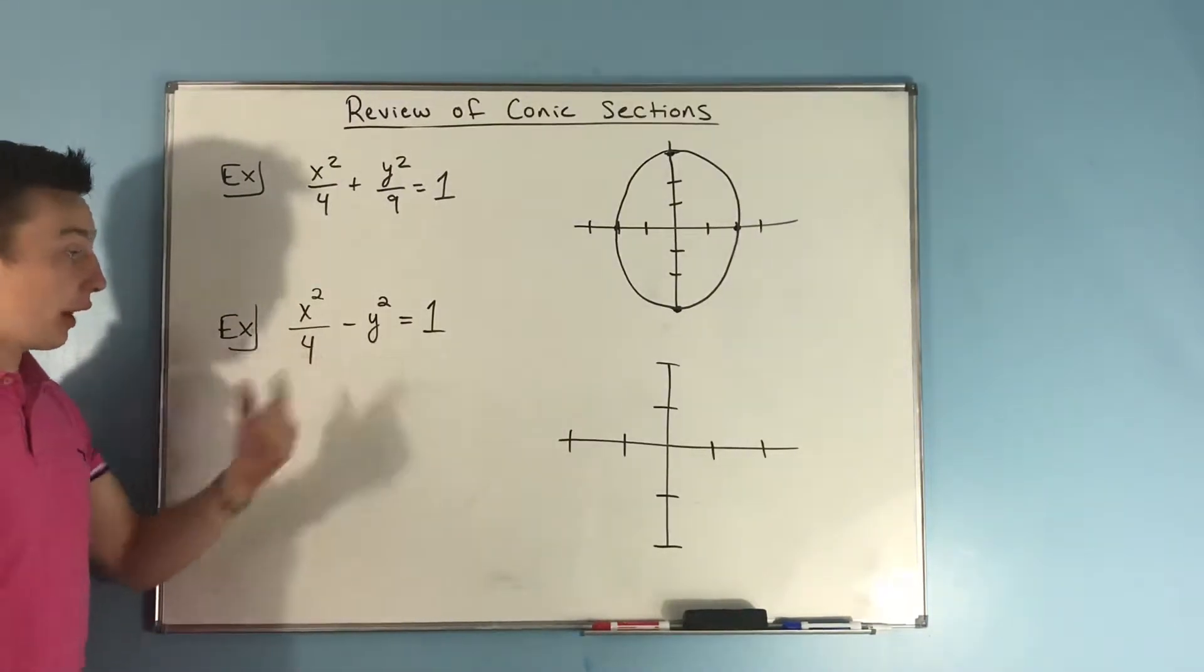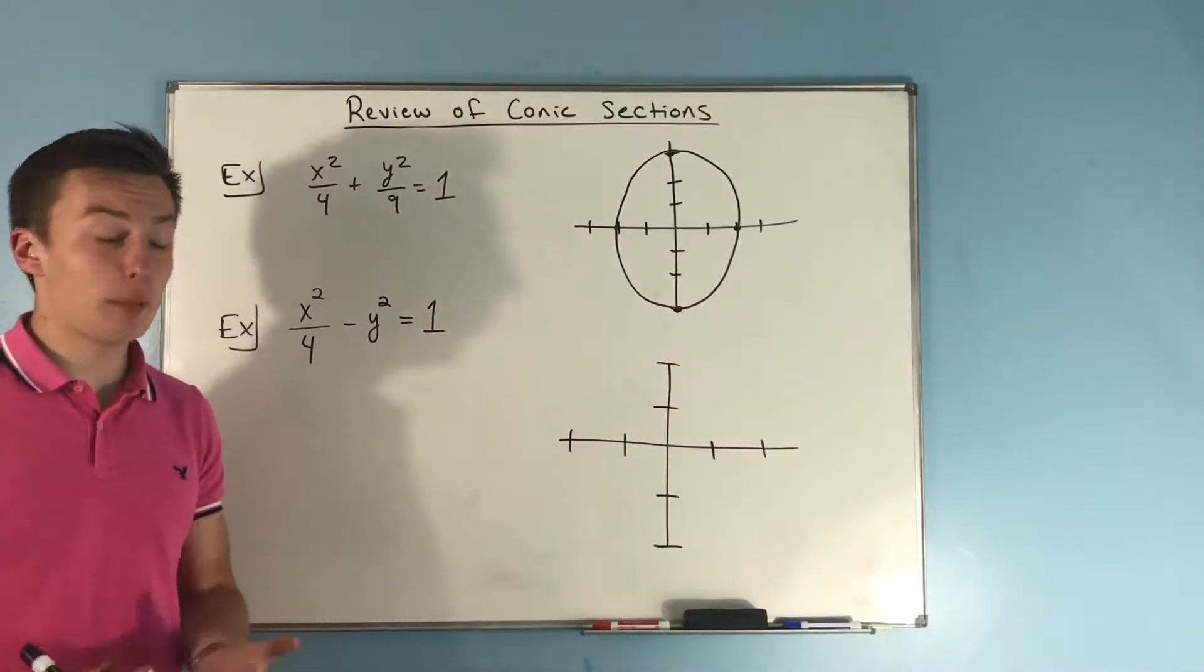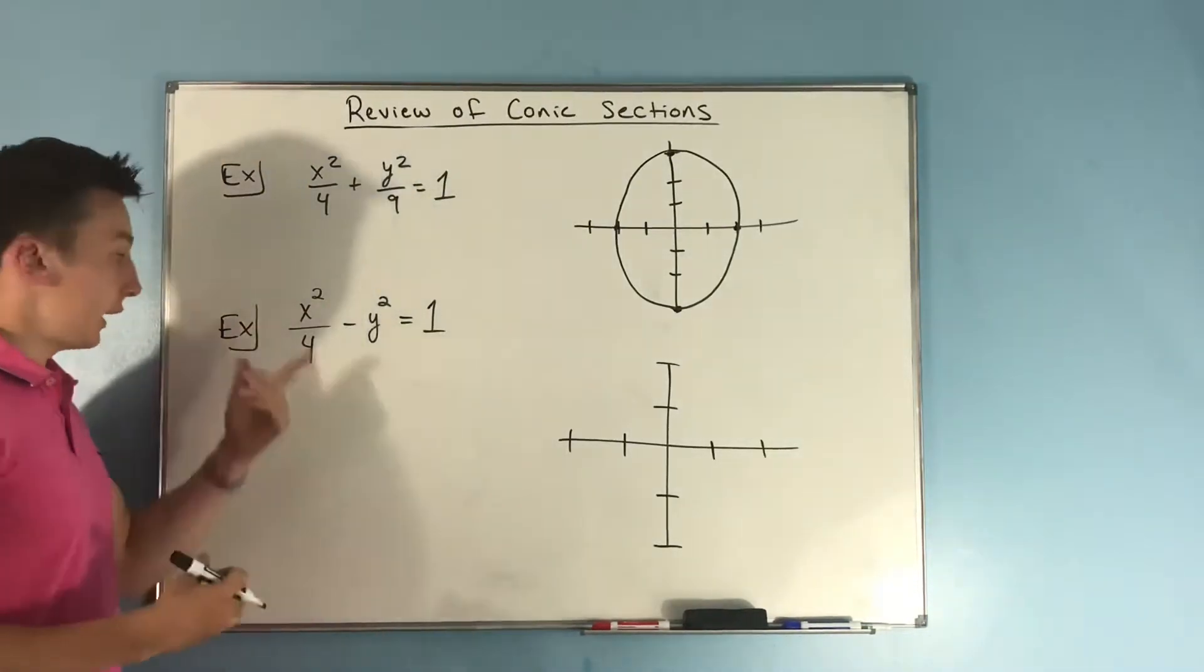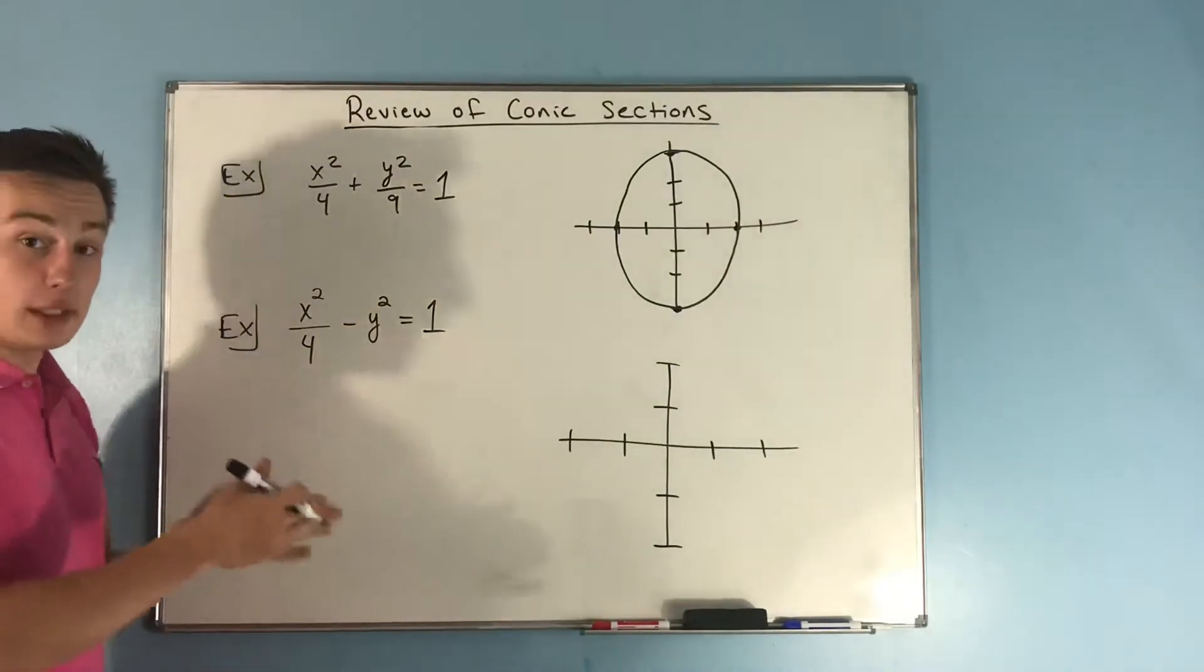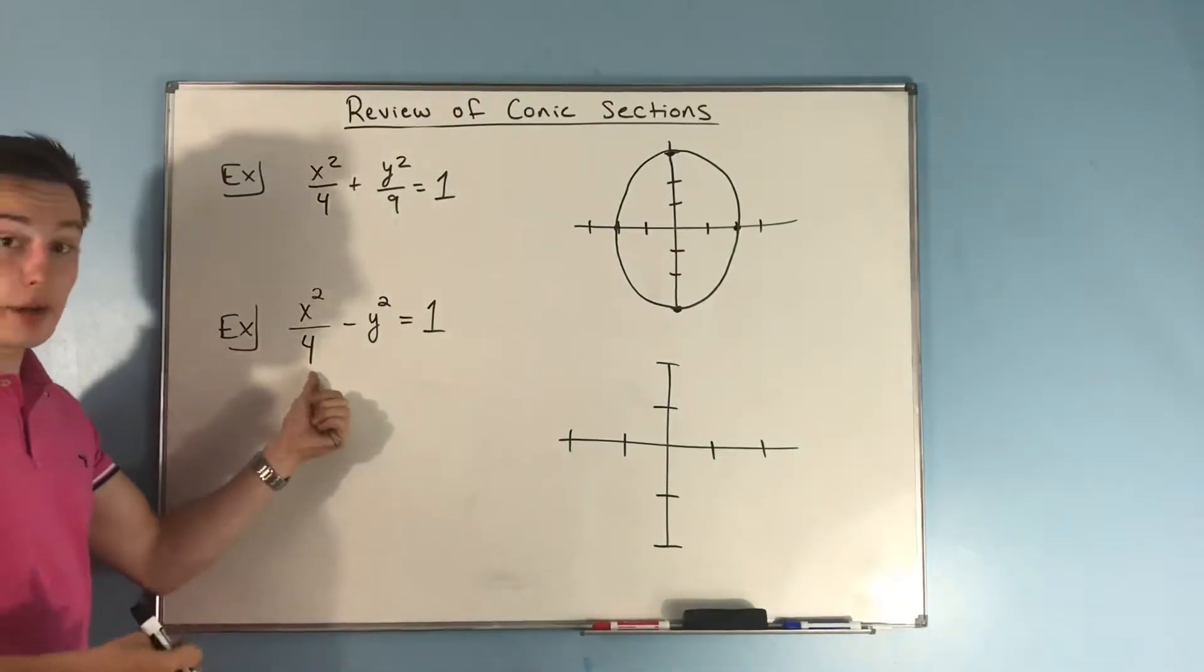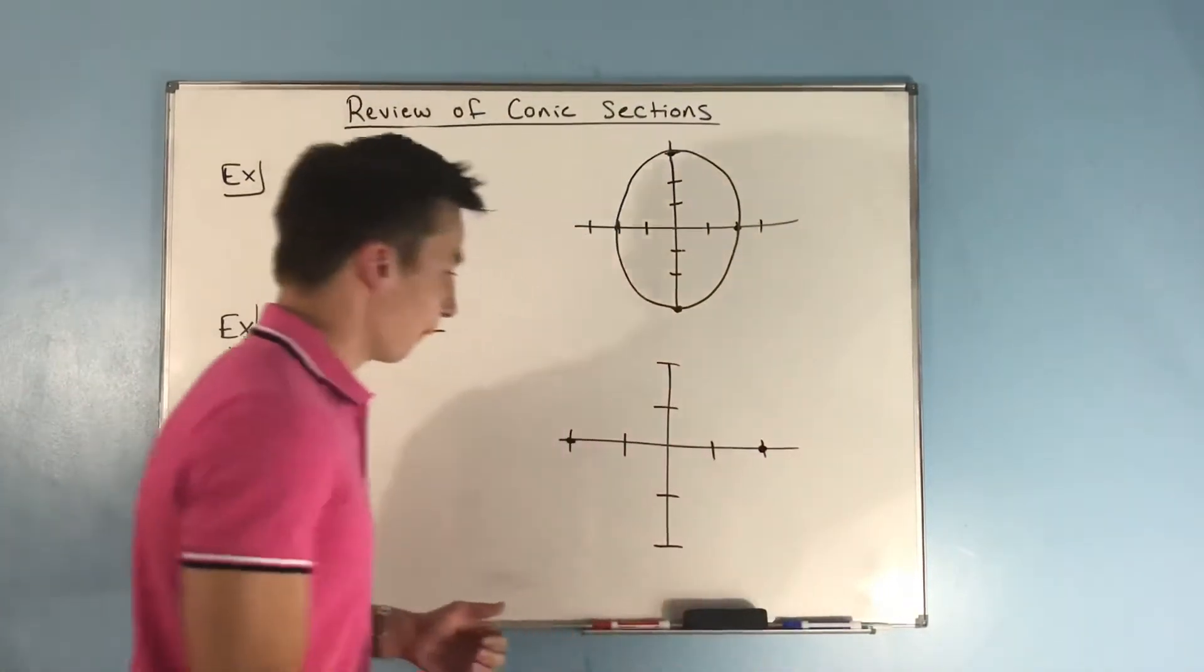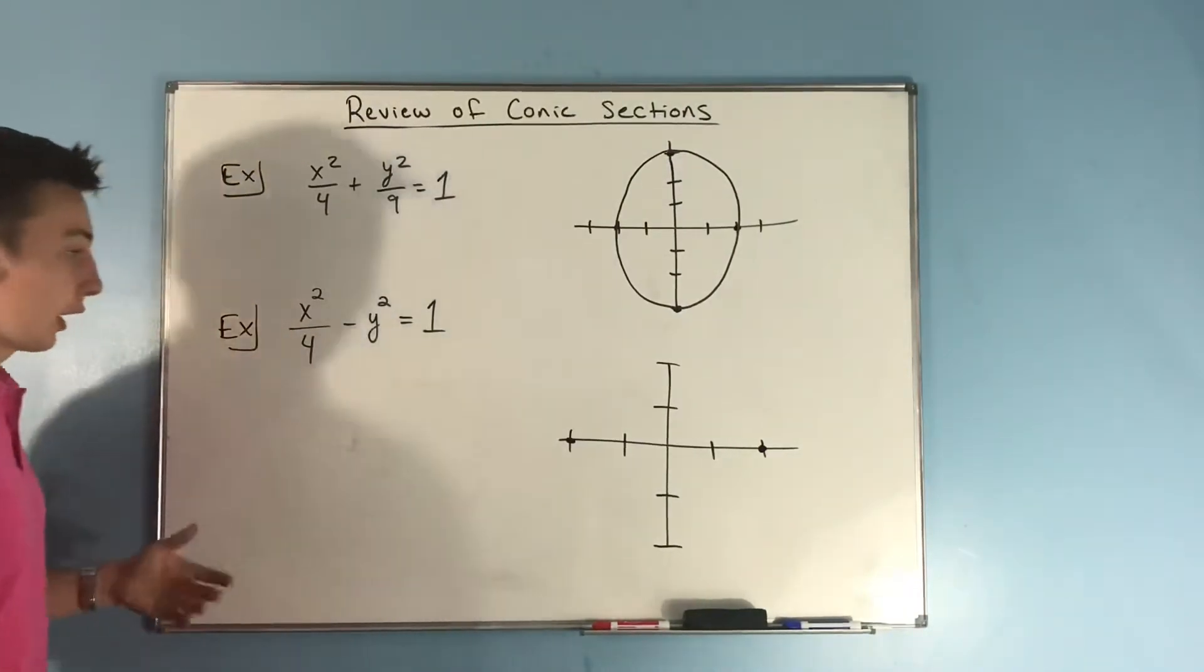So now what we want to do is graph this. We have x squared over 4 minus y squared equals 1. Now we see here that one of our terms is negative, which means we're dealing with a hyperbola here. Now, we're going to look at the positive term. The positive term is the one with x. Now, the distance from the center, which in this case is going to be the origin, right? We don't have like an x minus 3 quantity squared or anything like that. But we know that the distance from the center to the vertex of one of our hyperbolas is going to be just the square root of this denominator. The square root of the denominator of our positive term.